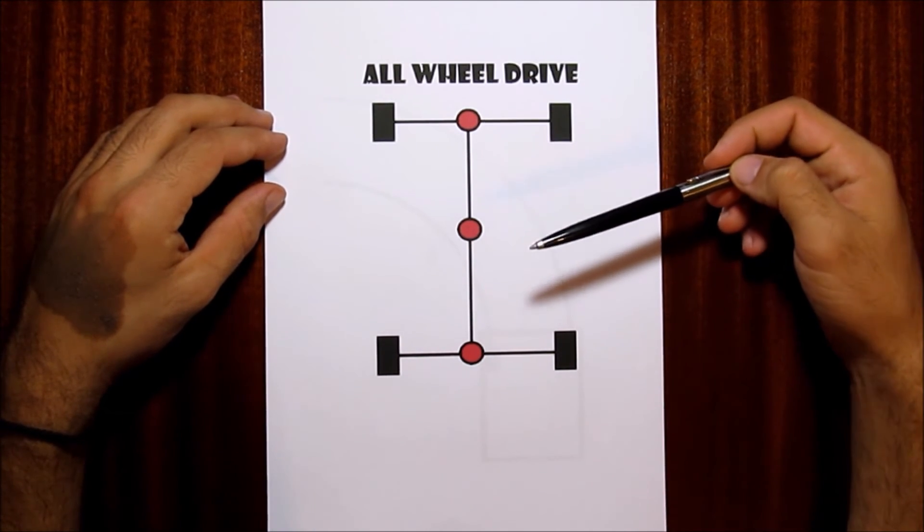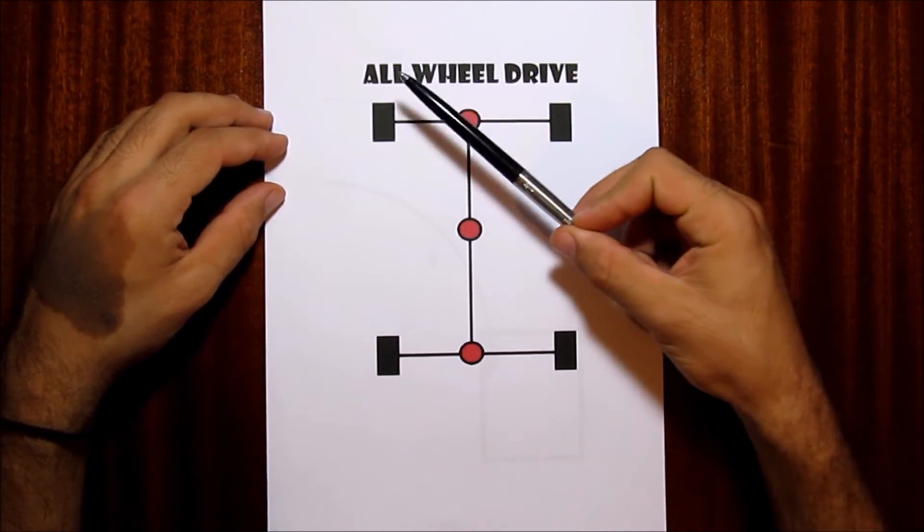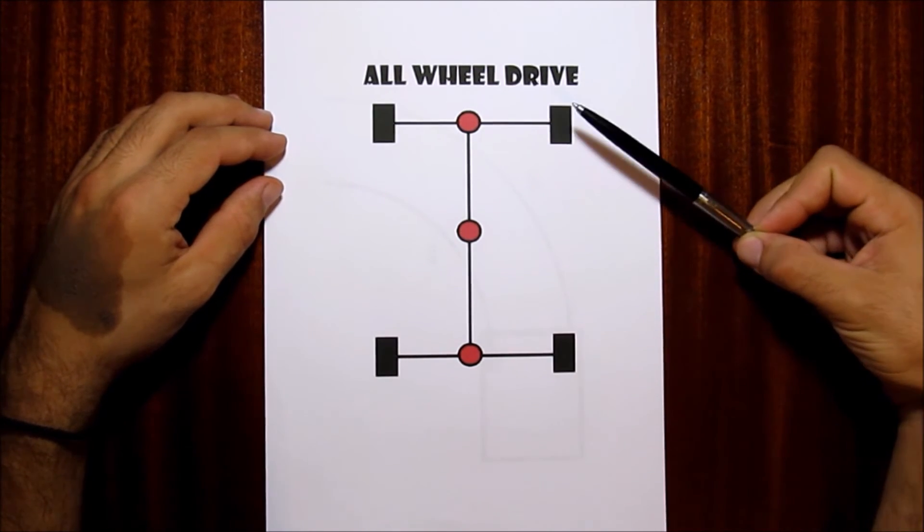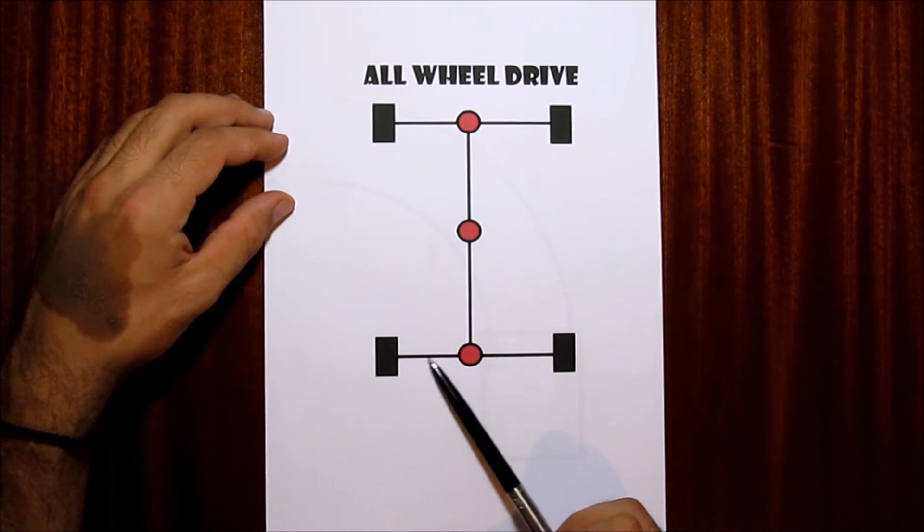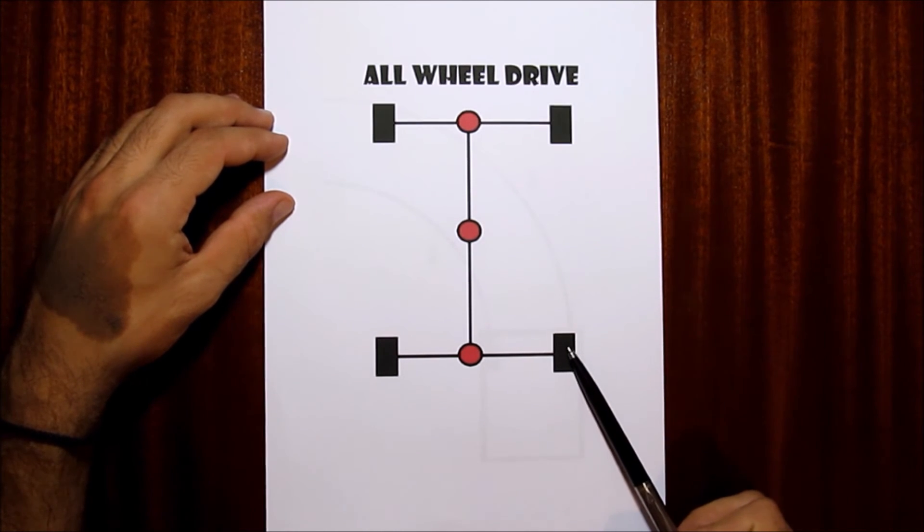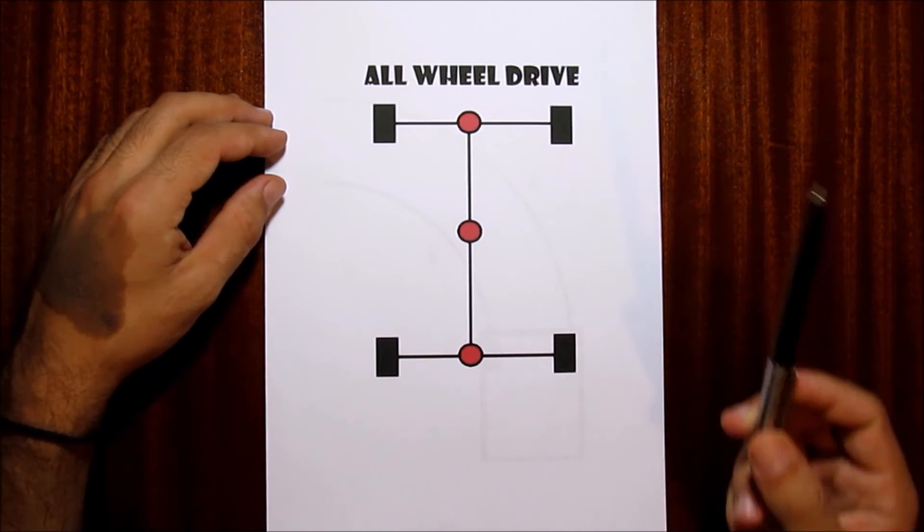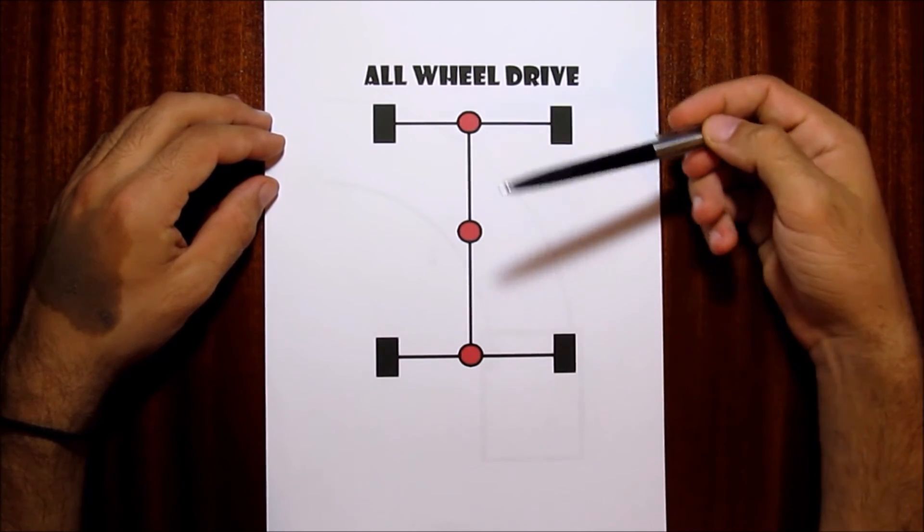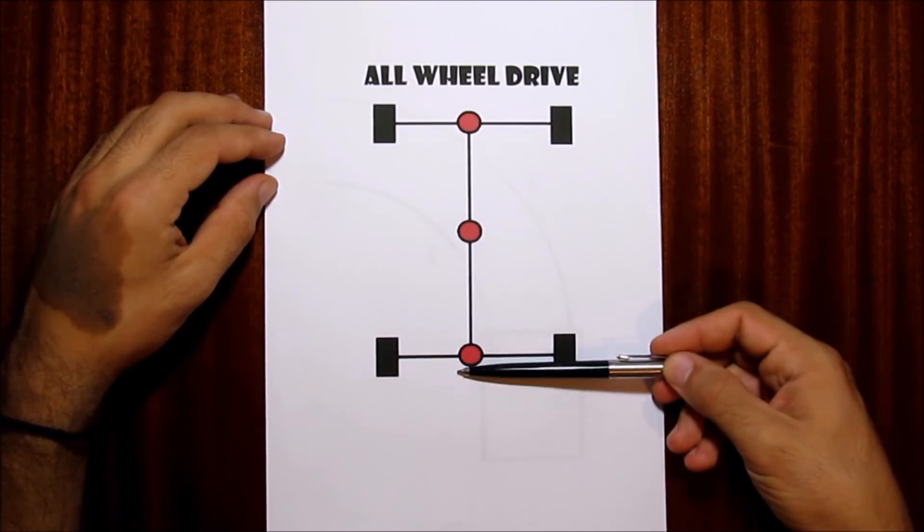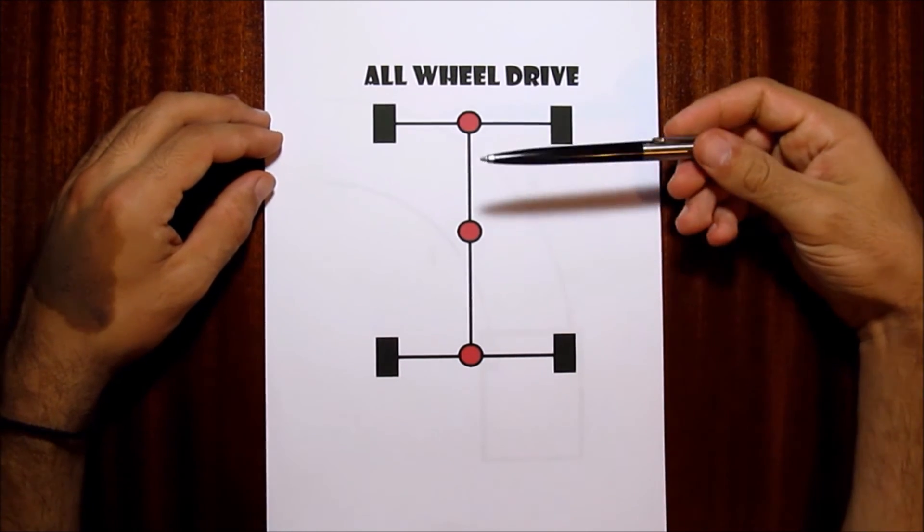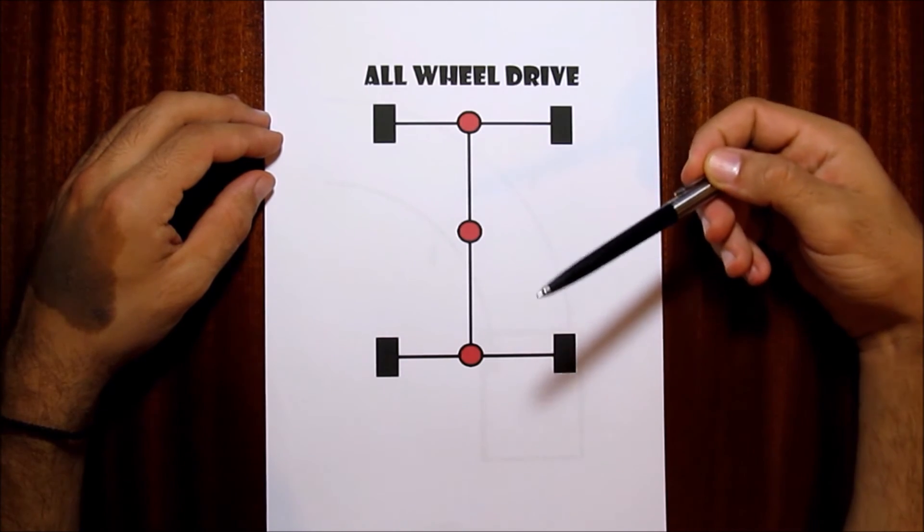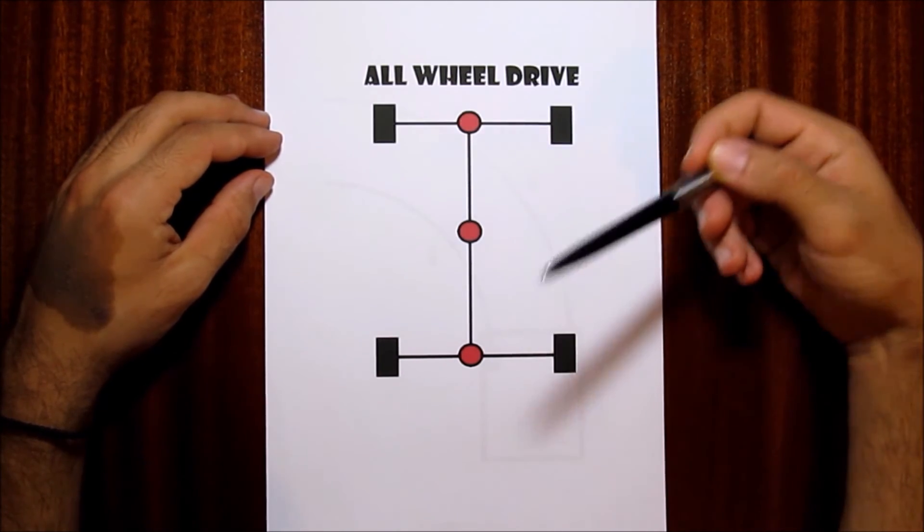However, all wheel drive cars have three differentials, one on the front axle for distributing the engine's power among the front wheels, one differential on the rear axle for distributing the engine's power on the rear wheels and one in the middle for distributing the power among the front wheels and the rear wheels. This way each wheel gets the appropriate power in order to cover the required distance when turning the car.